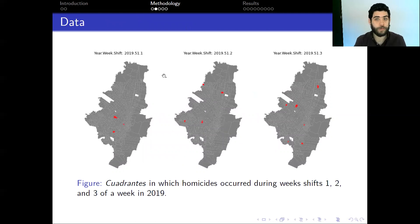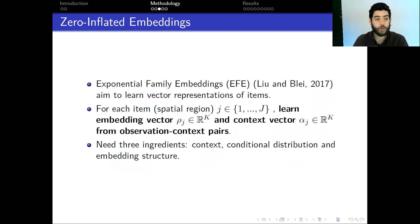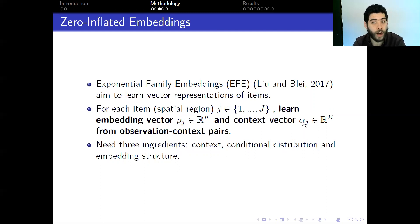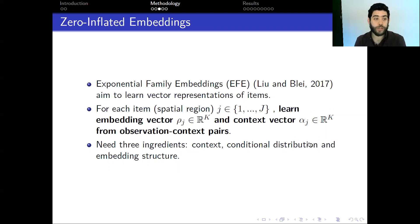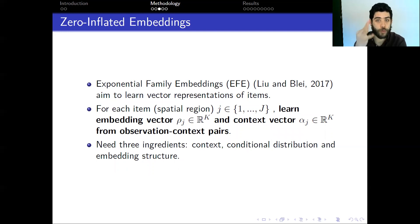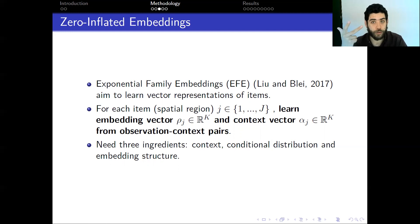We have 1,051 cuadrantes in the city, and we aim to learn an embedding vector ρ_j and a context vector α_j in some k-dimensional embedding space. The methodology needs three ingredients: the context, the conditional distribution, and the embedding structure.